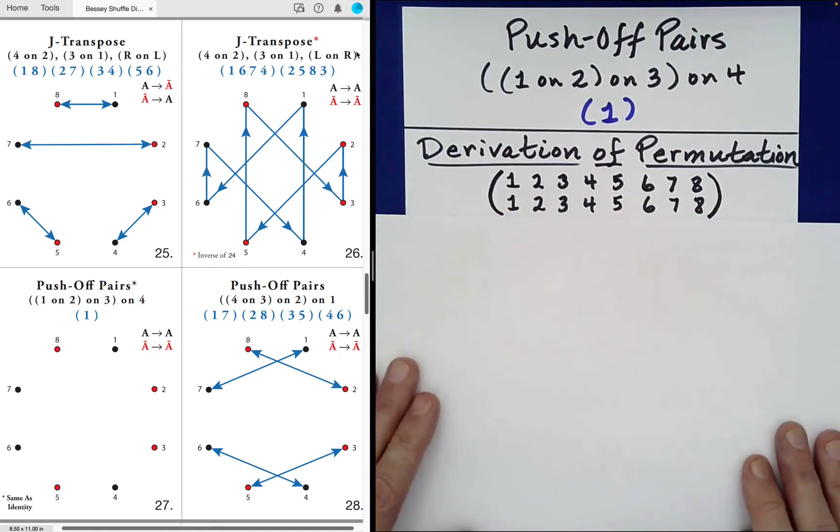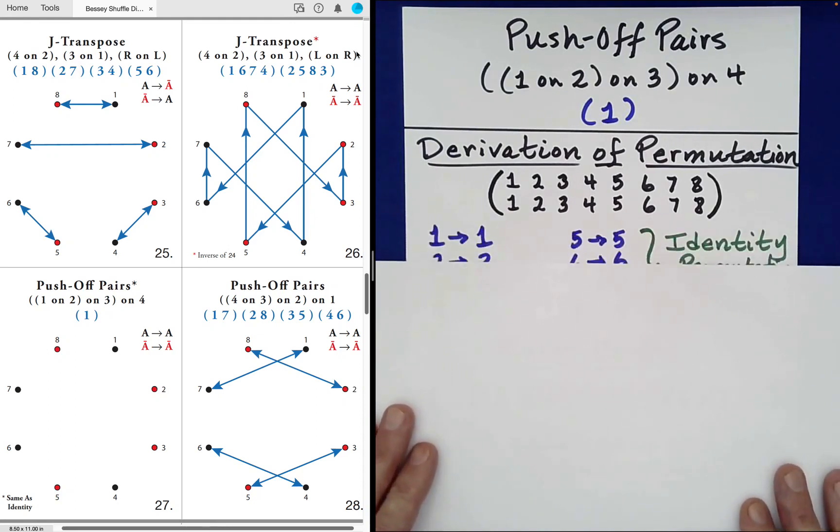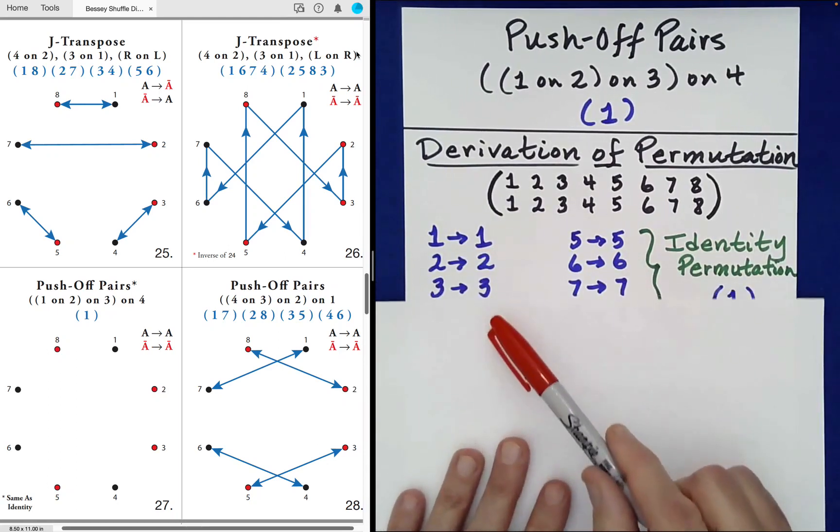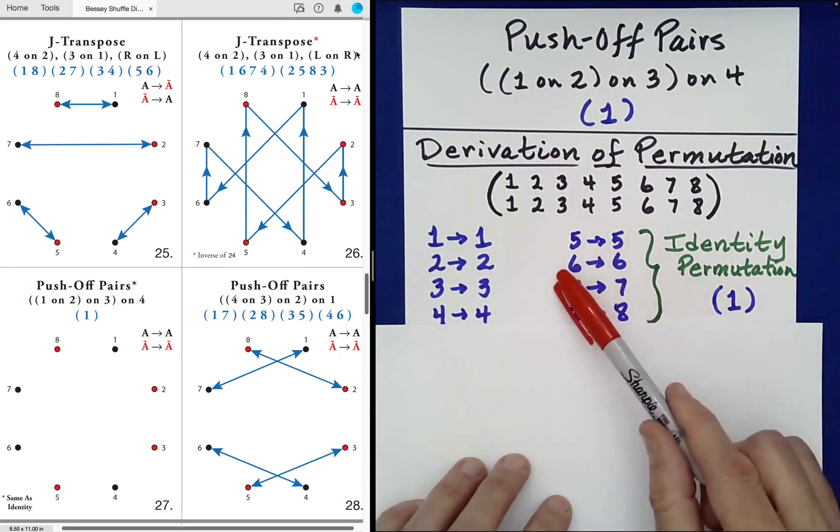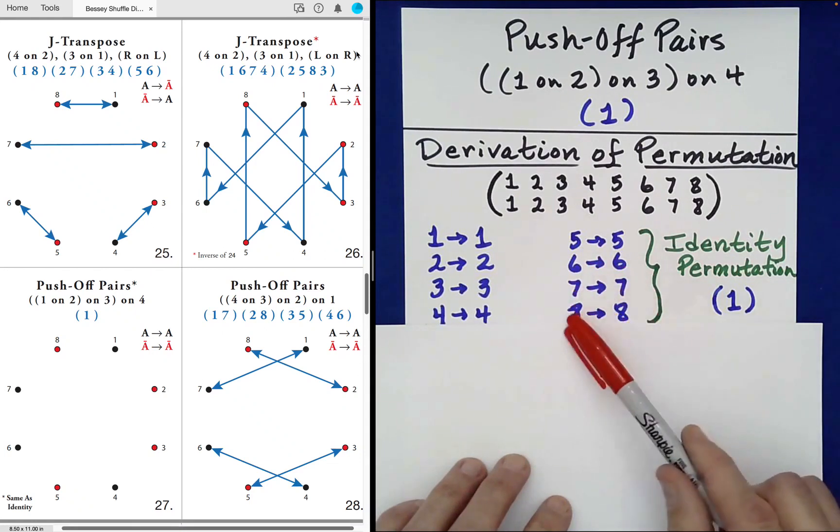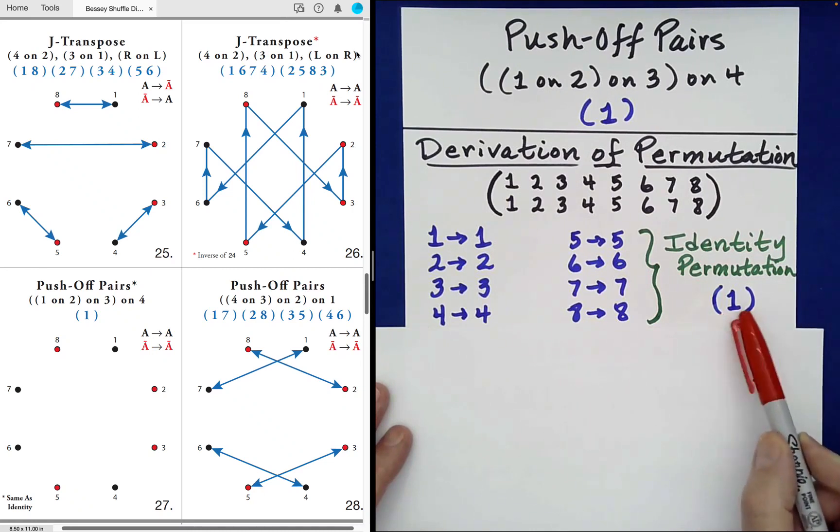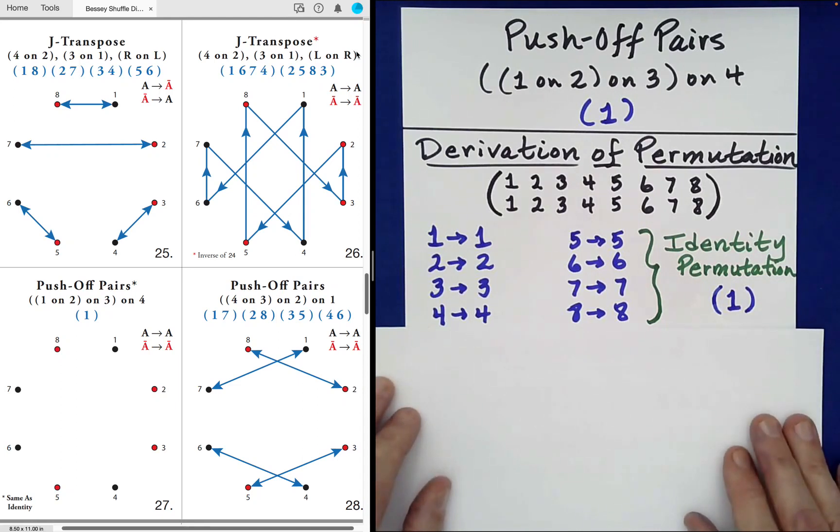So converting this to cycle notation, we obtain the following. One goes to one, two goes to two, three goes to three, four goes to four, five goes to five, six to six, seven to seven, eight to eight. So every single card in positions one through eight have been returned to their starting position. And one way to represent this is to just have a set of parentheses with a one inside. That's how the identity permutation is commonly represented.